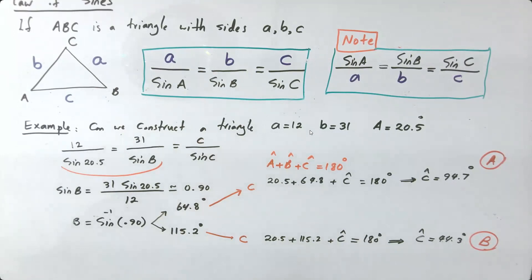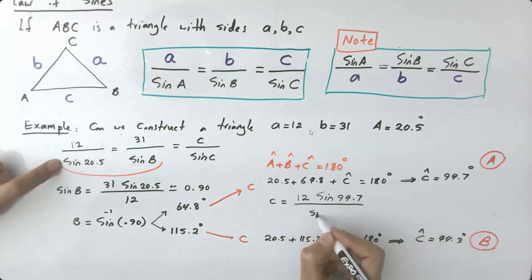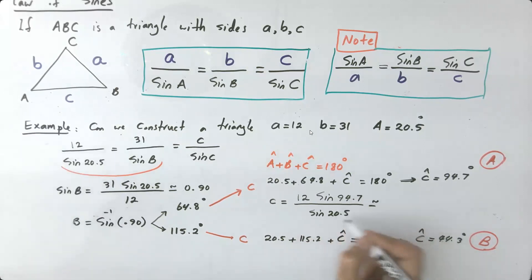Well, here you can say that C, length C, is equal to A, which is 12, times sine C, which is 94.7, divided by sine of 20.5. This way, your length C is going to be about 34.15.